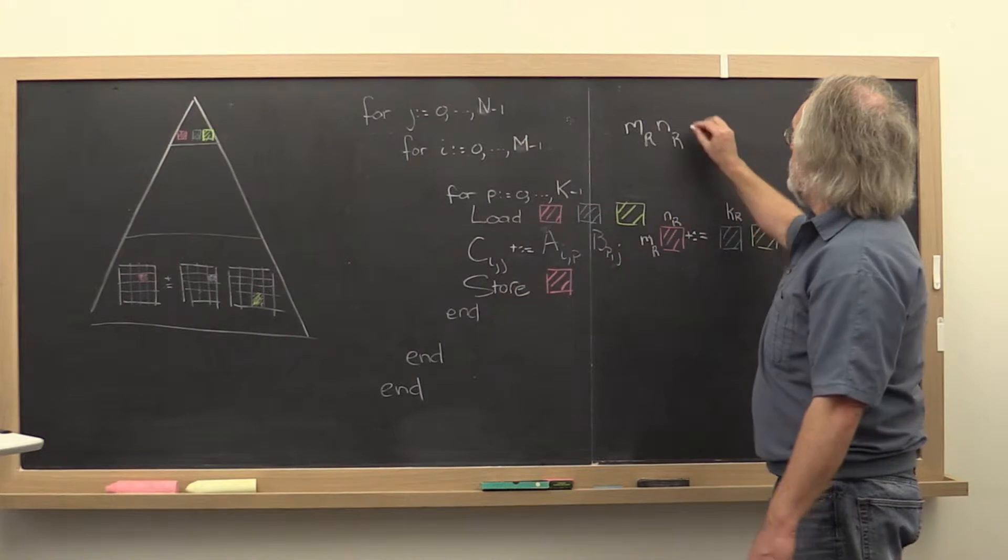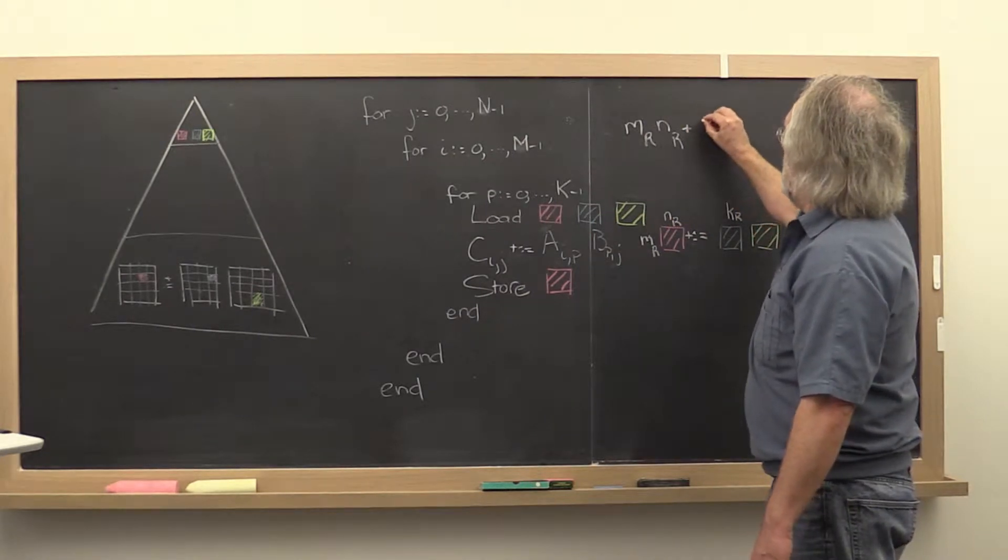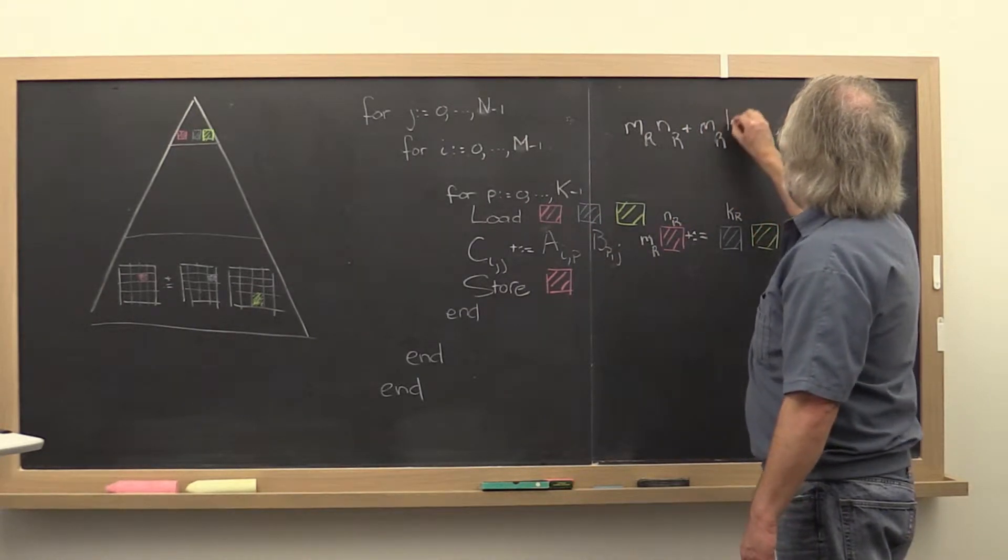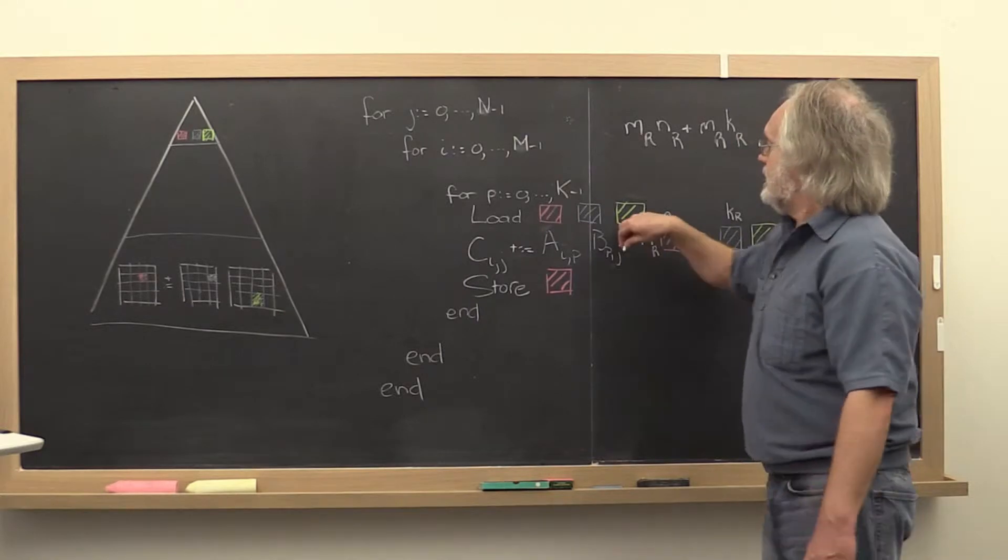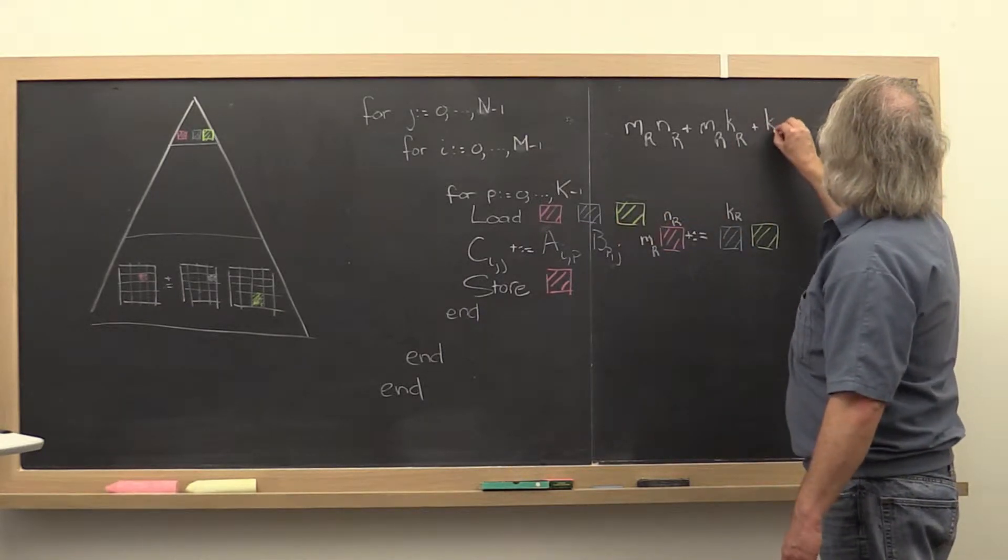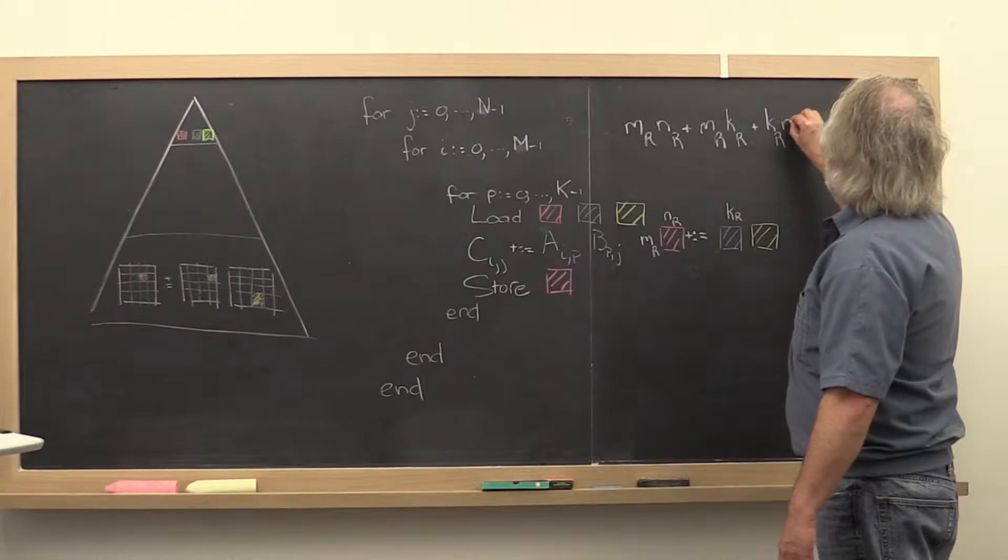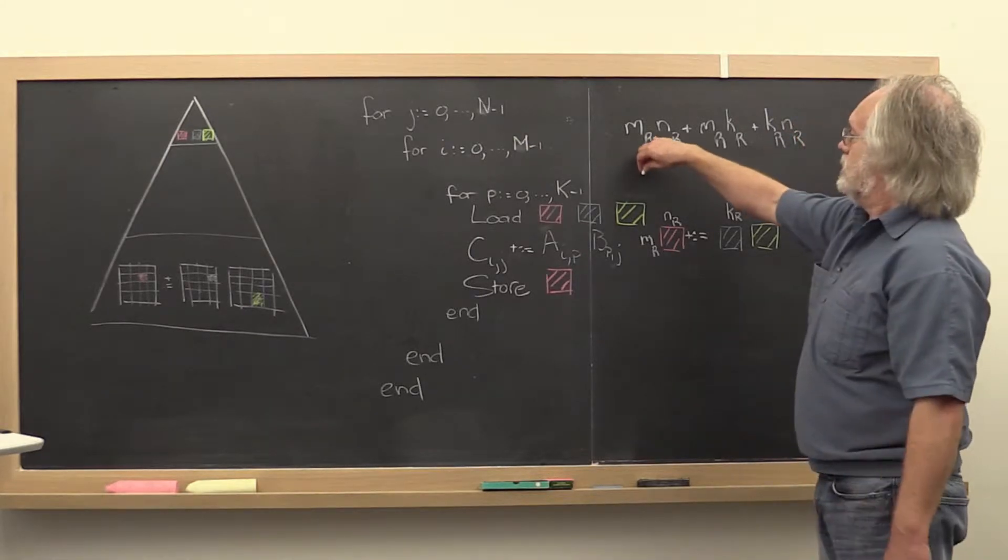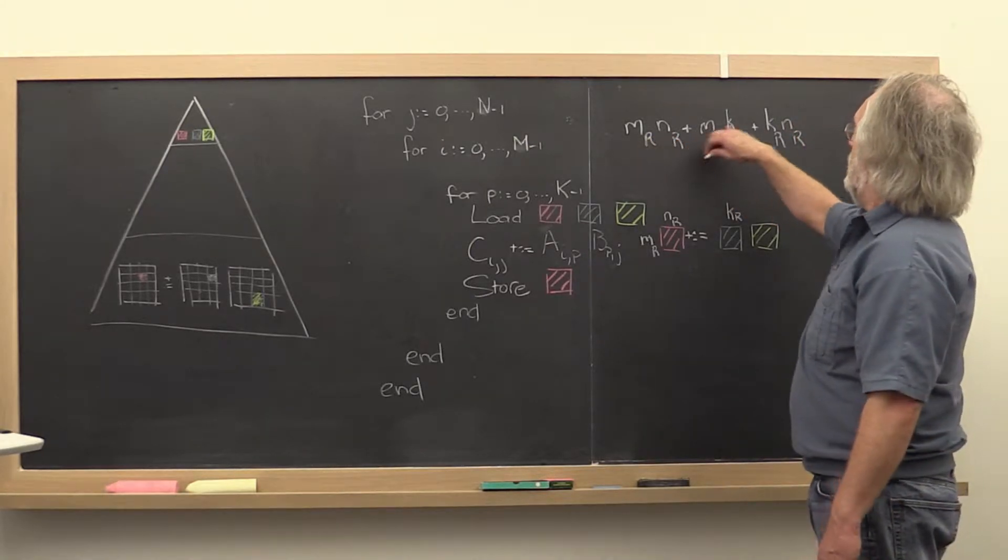The size of the second matrix is mr by kr. And the size of the third matrix is kr by mr, submatrix of C, A, and B.